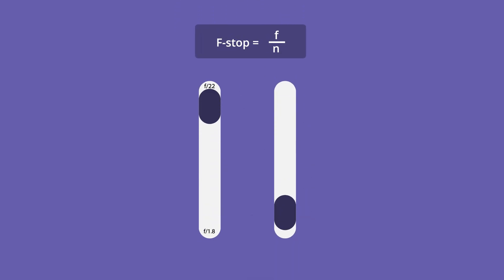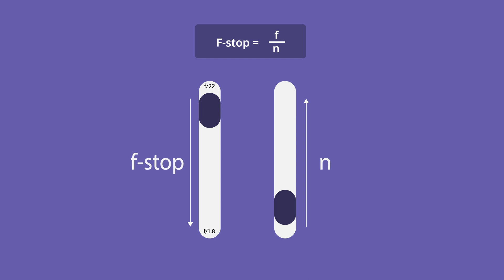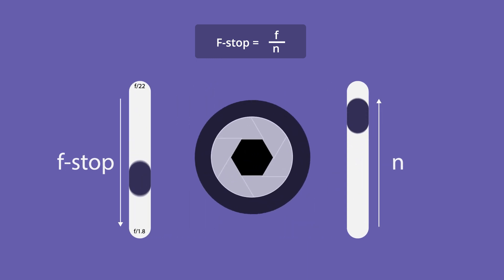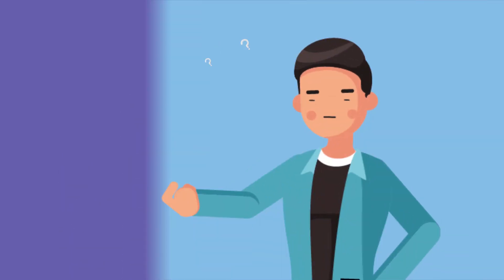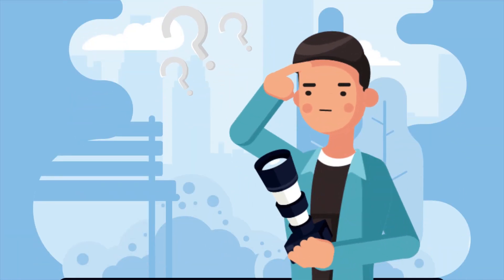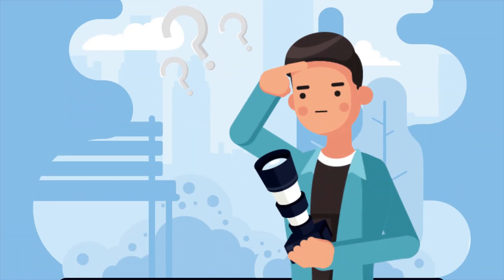What this formula shows is that there is an inverse relationship between aperture diameter and the f-stop value. That is, the smaller the f-stop value, the wider the aperture diameter will be. This can be confusing, so let's examine it further.